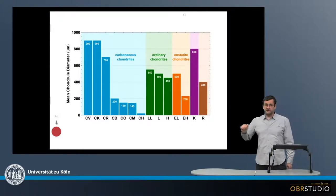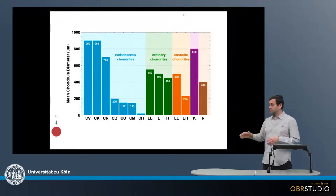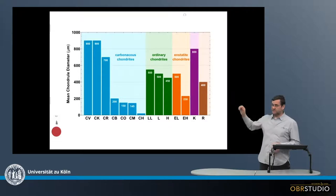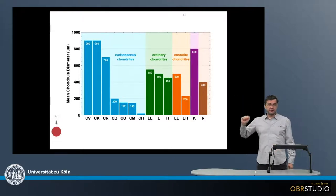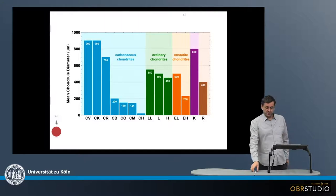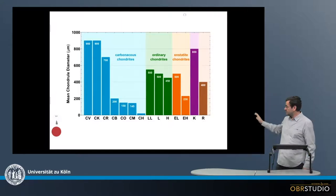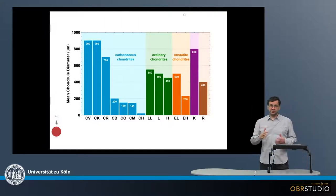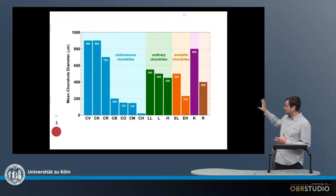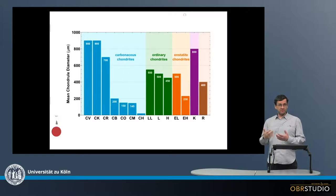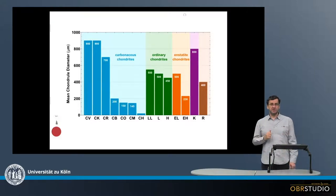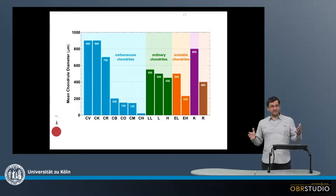This further discriminates into the various chondrite classes: the carbonaceous chondrites, enstatite chondrites, ordinary chondrites, and the Rumruthi and Kakangari as individual classes. We can immediately see a couple of differences and similarities. For example, the carbonaceous chondrites have the smallest but also the largest mean chondral diameters, which means they also have the largest scatter in chondral diameters.